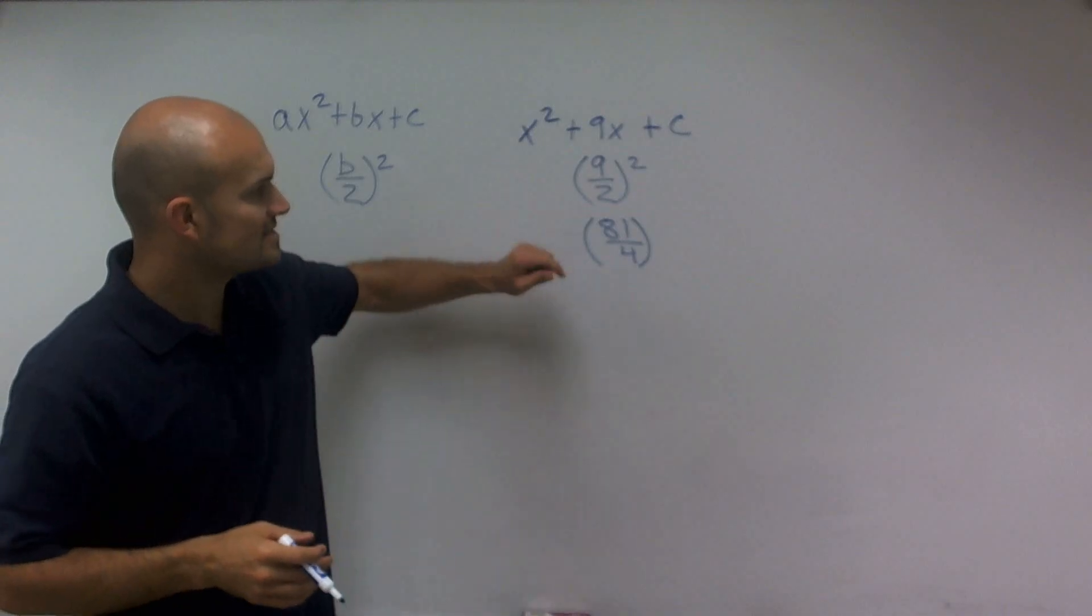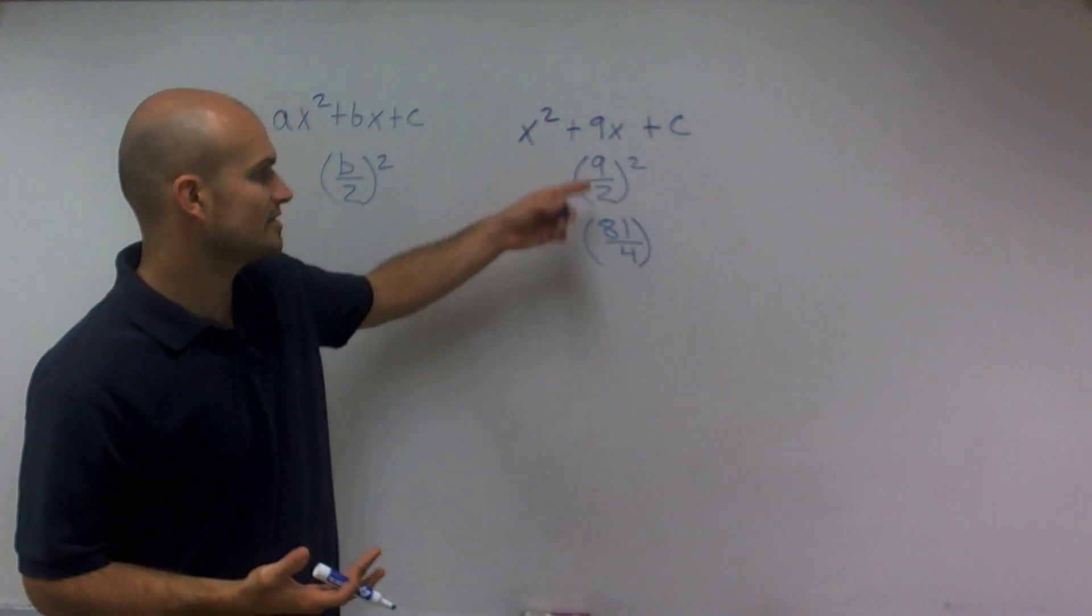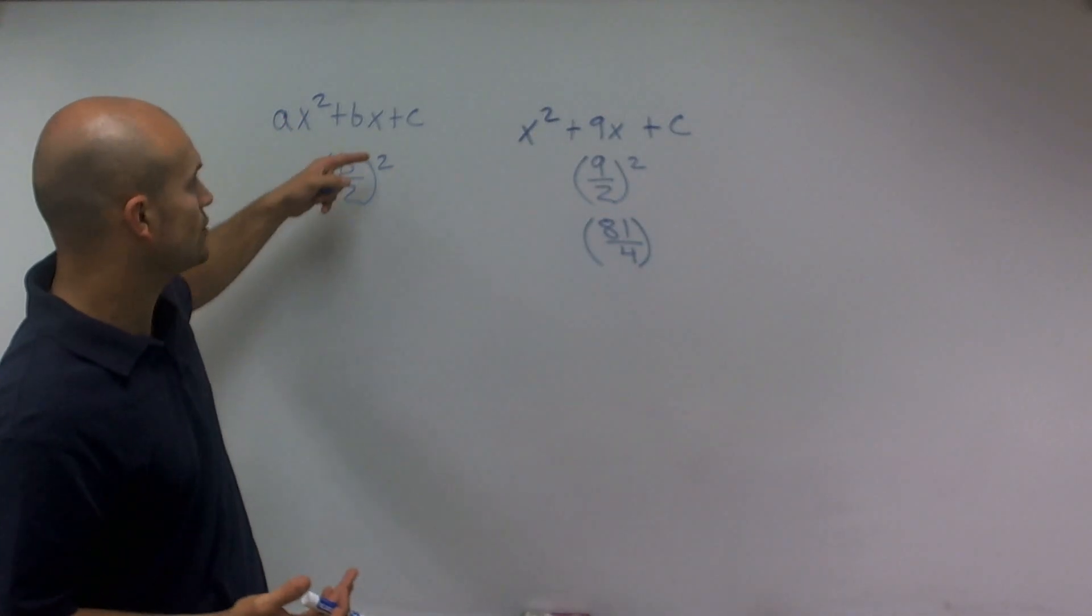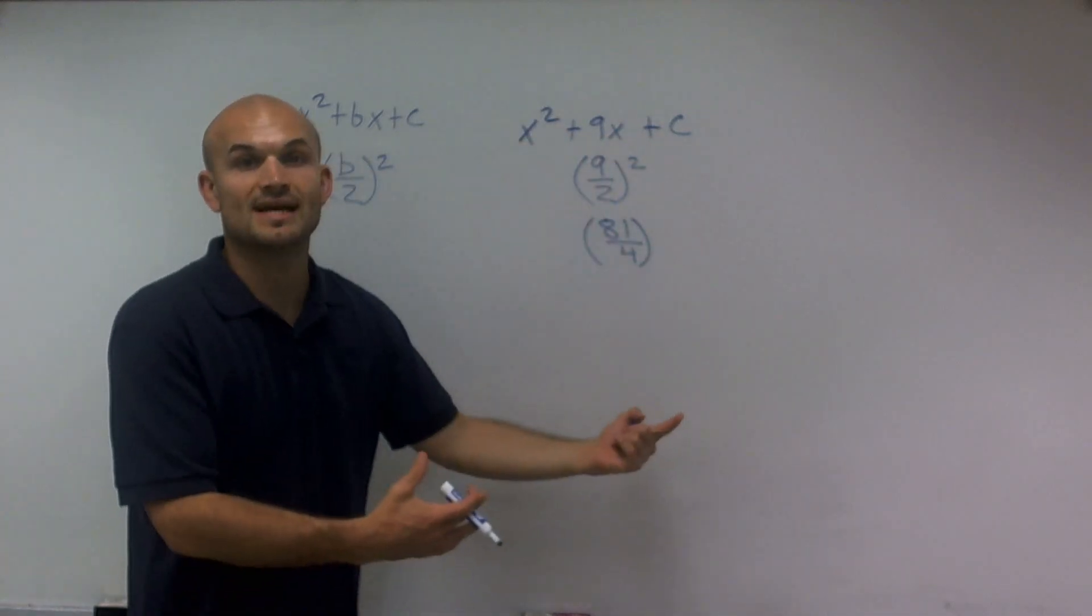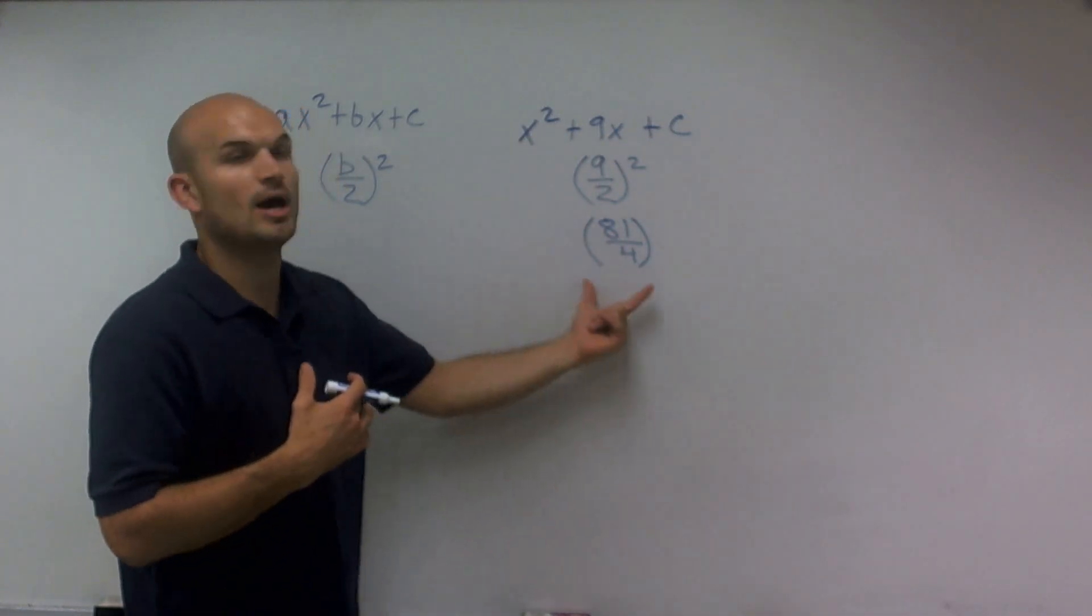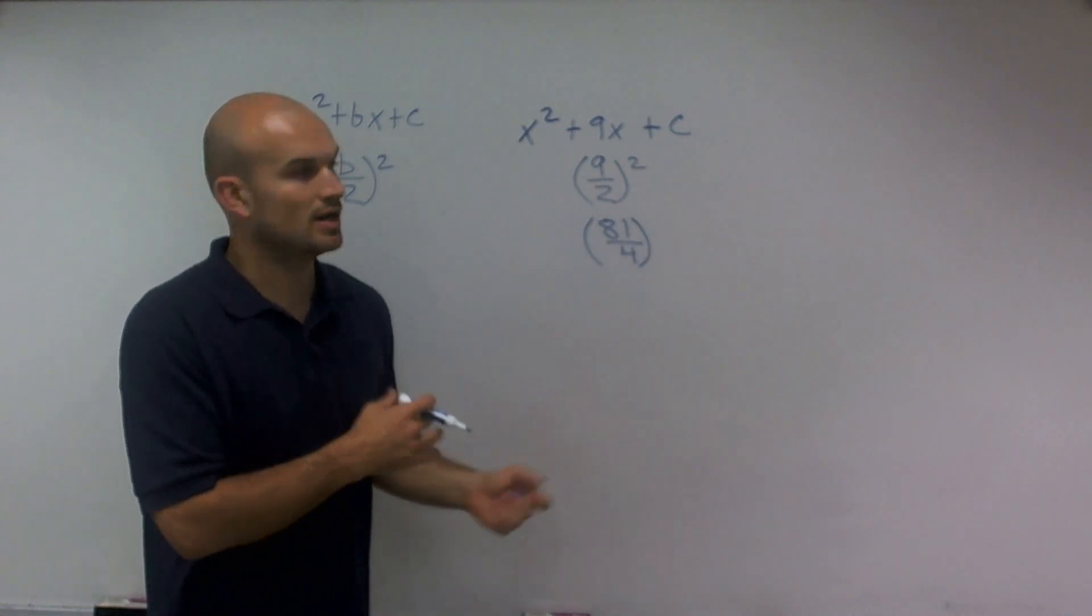All right? So that's just going to help us be able to complete the square. So in this problem, you just take your b divided by 2, square it, and that is going to be your c that's now, in the next step of completing the square, is going to help you create that perfect square trinomial.